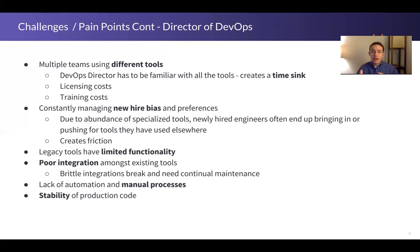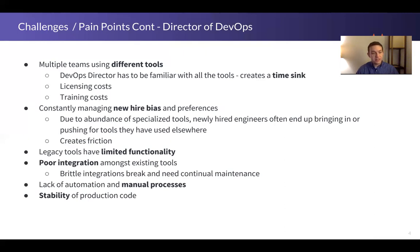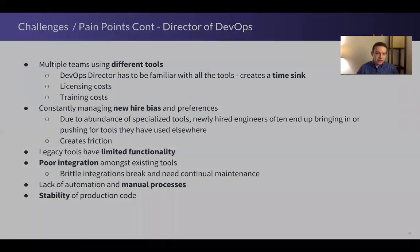Lack of automation or manual processes is also a pain point. Anything that needs to be done manually is something the director of DevOps is constantly looking at: what are we doing manually, and how can we automate that to make it faster, more stable, more uniform, and more consistent? They care about the stability of the production code.